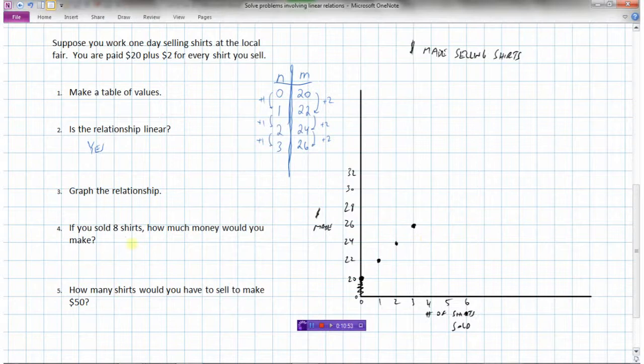Now, the question is, if we sold eight shirts, how much money would we make? Well, let's see a couple of ways that we could do this. We could continue our points on. So 4 would be 28, 5, 6, 7, 8. And this would go, this is going up by 2. So 34, 36. So it looks like $36 is what we would make. So one way would be to use the graph to get 36.